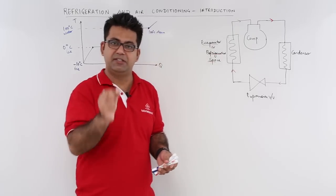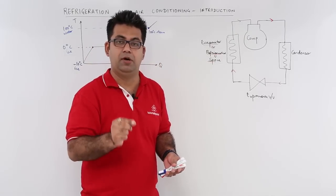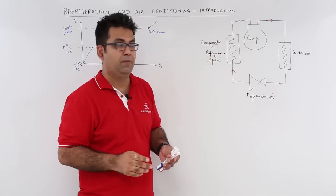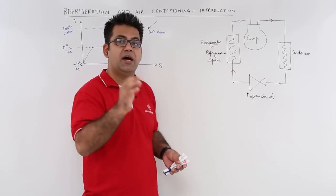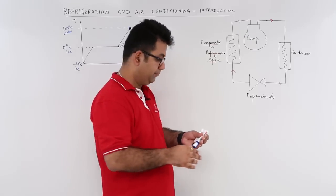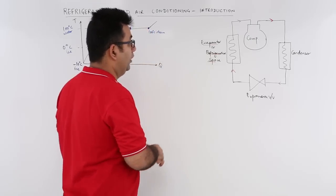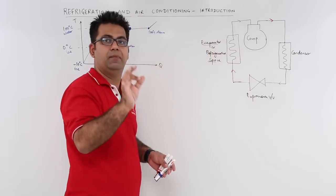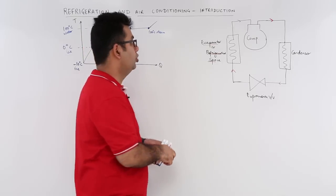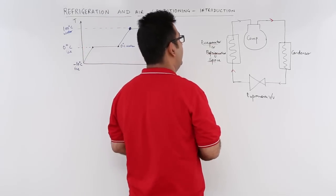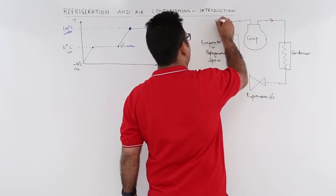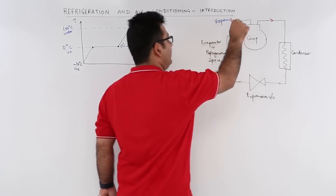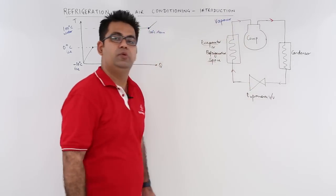The compressor cannot handle vapor or liquid — it has to handle vapor, because liquids are incompressible. So whatever is going into the compressor has to be completely vaporized. We can say that you have vapor going into the compressor.